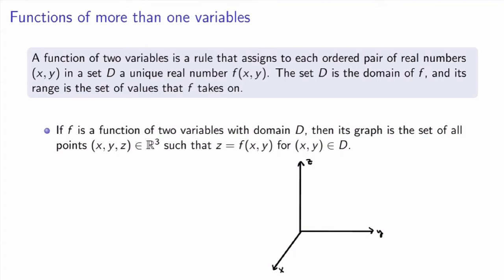Let me first define what a function of more than one variable is. In this video I'm going to focus on functions of two variables, but everything I say can be easily generalized. Recall that a function of a single variable was a rule that assigned to every real number x in its domain a unique real number f. Similarly, a function of two variables is a rule that assigns to each ordered pair of real numbers x and y, in a set d which is the domain, a unique real number f. So the function f here depends on two variables x and y.